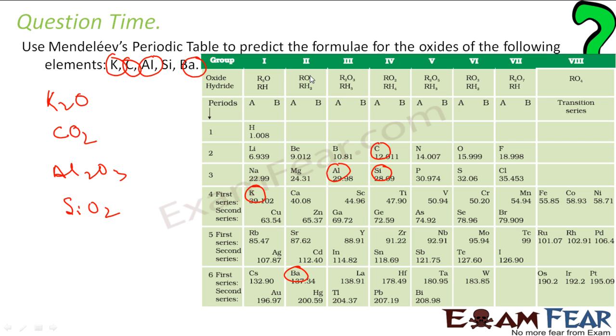And that's my answer. Very simple. With this periodic table, you can actually find which kind of oxides or which kind of hydrides will form.